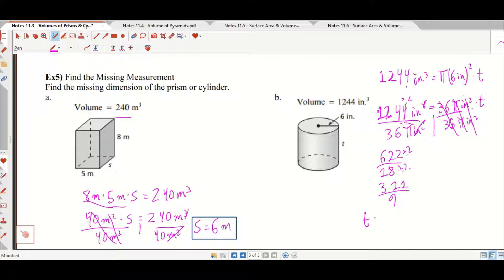That is, T is equal to 311 over, and notice there's that pi in the denominator, 9 pi inches. Which again, that's not the most helpful measurement I've ever seen in my life. So maybe it would be better to say that it's approximately 311 divided by 9, then I'm going to divide that by pi.